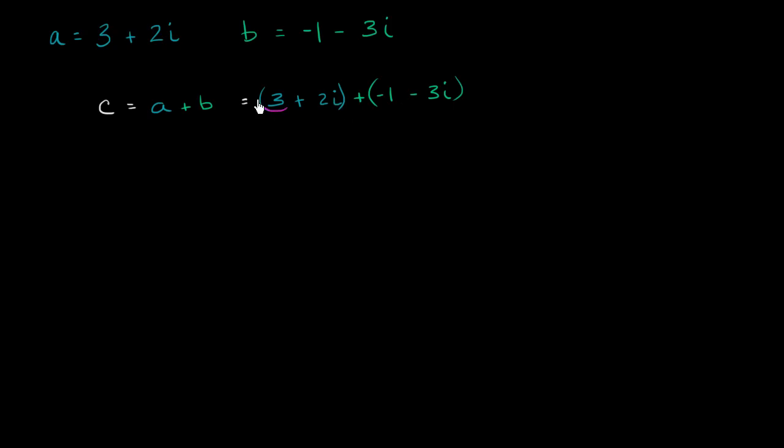So I could add the 3 to the negative 1 to get 3 plus negative 1 is 2. So I get a real part now of 2. And then I can add the two imaginary parts. So if I have 2i minus 3i, that's going to be negative i. So just like that, I added the two real parts, added the two imaginary parts, and I got 2 minus i.